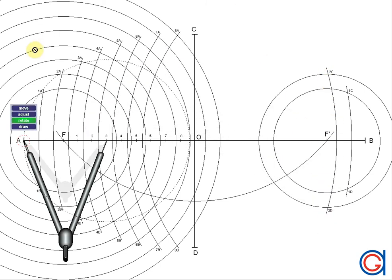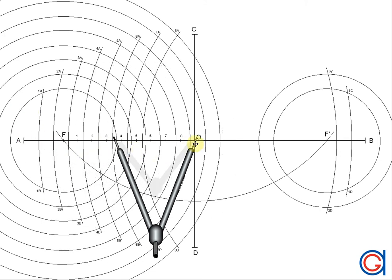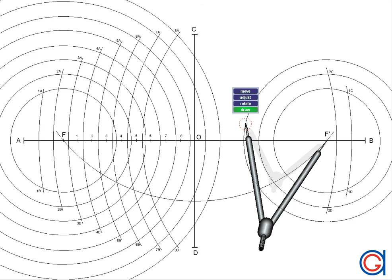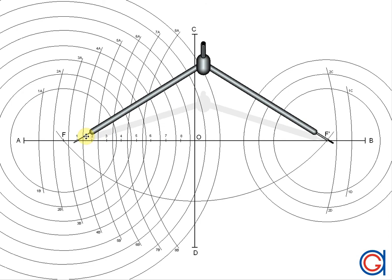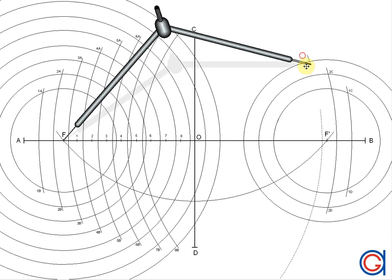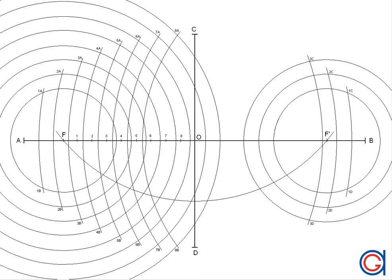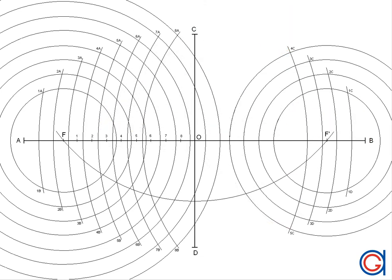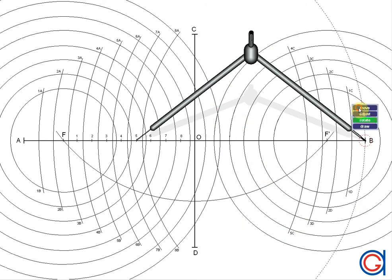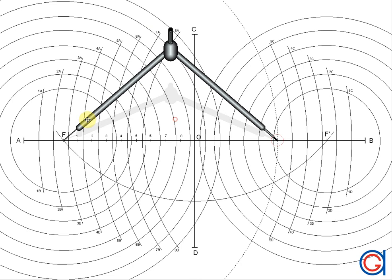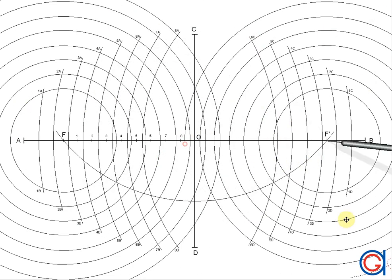We will call these two new points 2C and 2D. We continue this process, drawing eight new circles again. Two new points, 3C and 3D. We've sped up the video again here, so that you don't get bored at home. We're just following the same procedure again, locating all our new points. So now, we have all the points of the ellipse that we are going to draw.